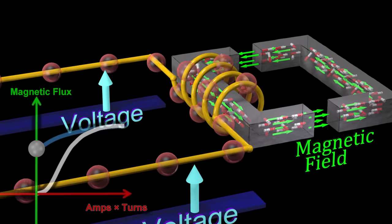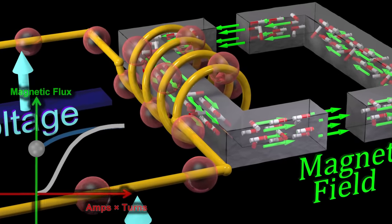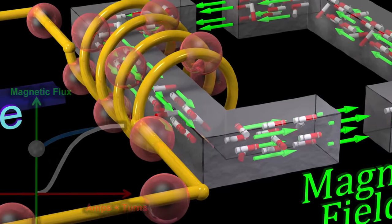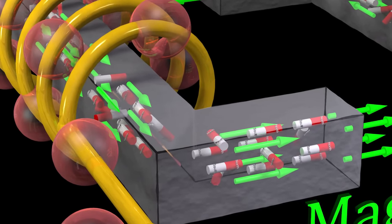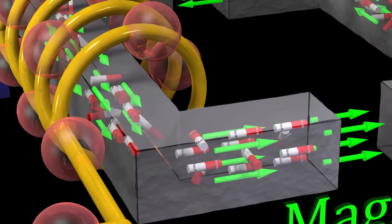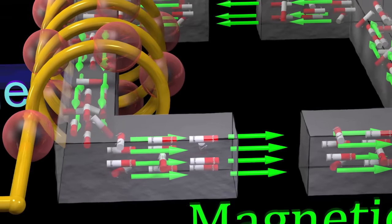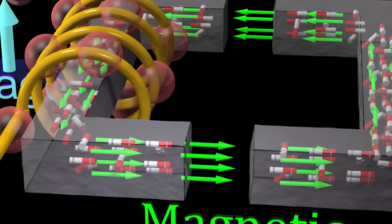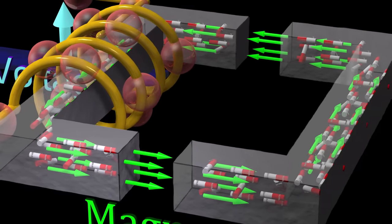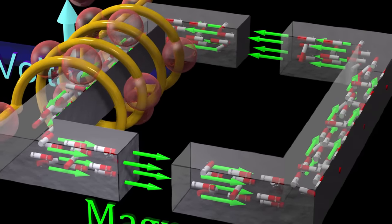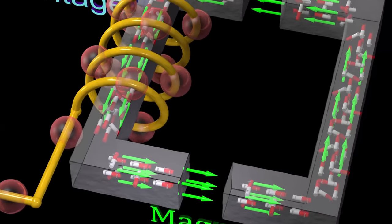Therefore, even in the absence of a current, the two halves of this magnetic material will now feel an attractive force towards each other. We refer to this by saying that the material has been magnetized.